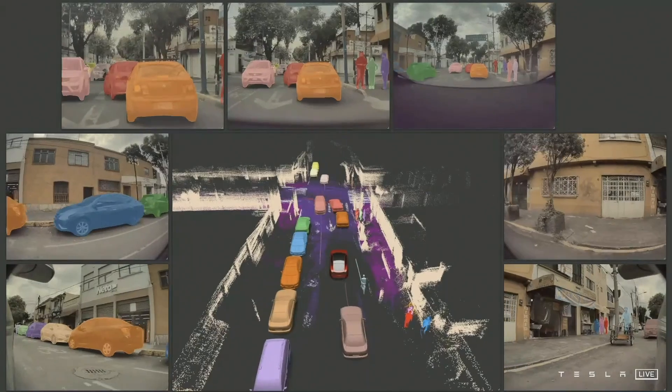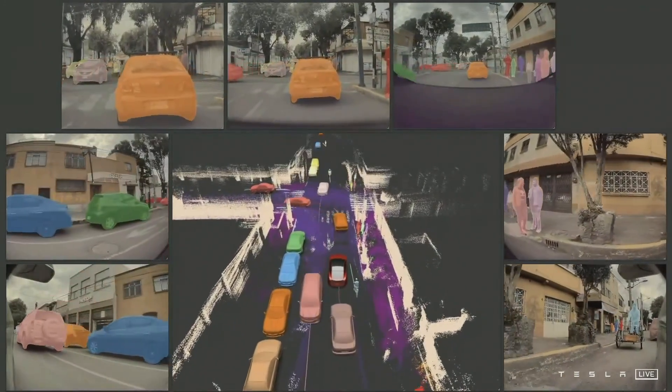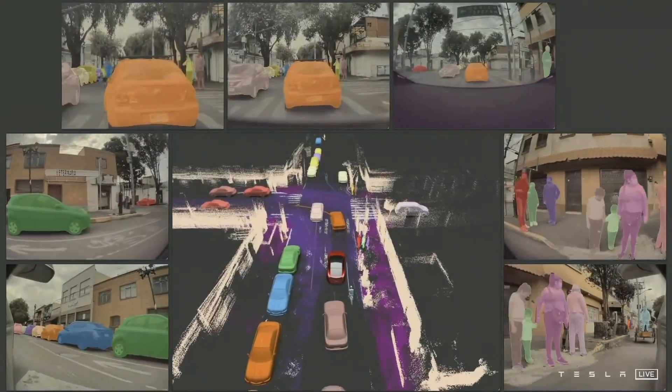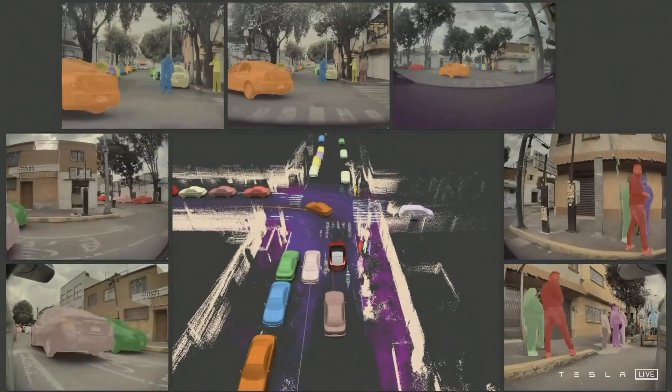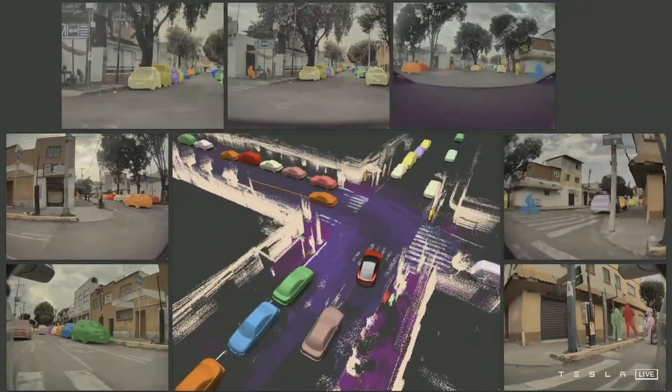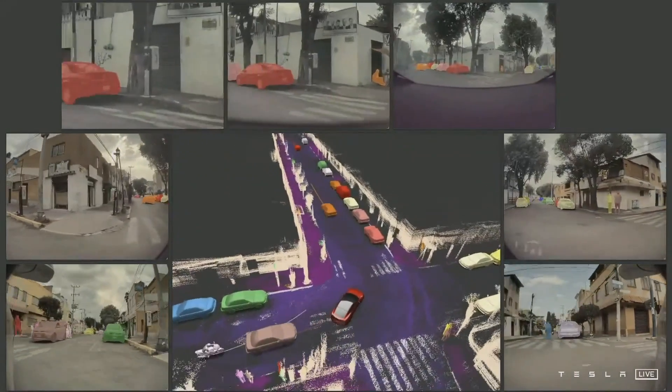Combining everything together, we can produce these amazing data sets that annotate all of the road texture, all of the static objects, and all of the moving objects, even through occlusions, producing excellent kinematic labels.